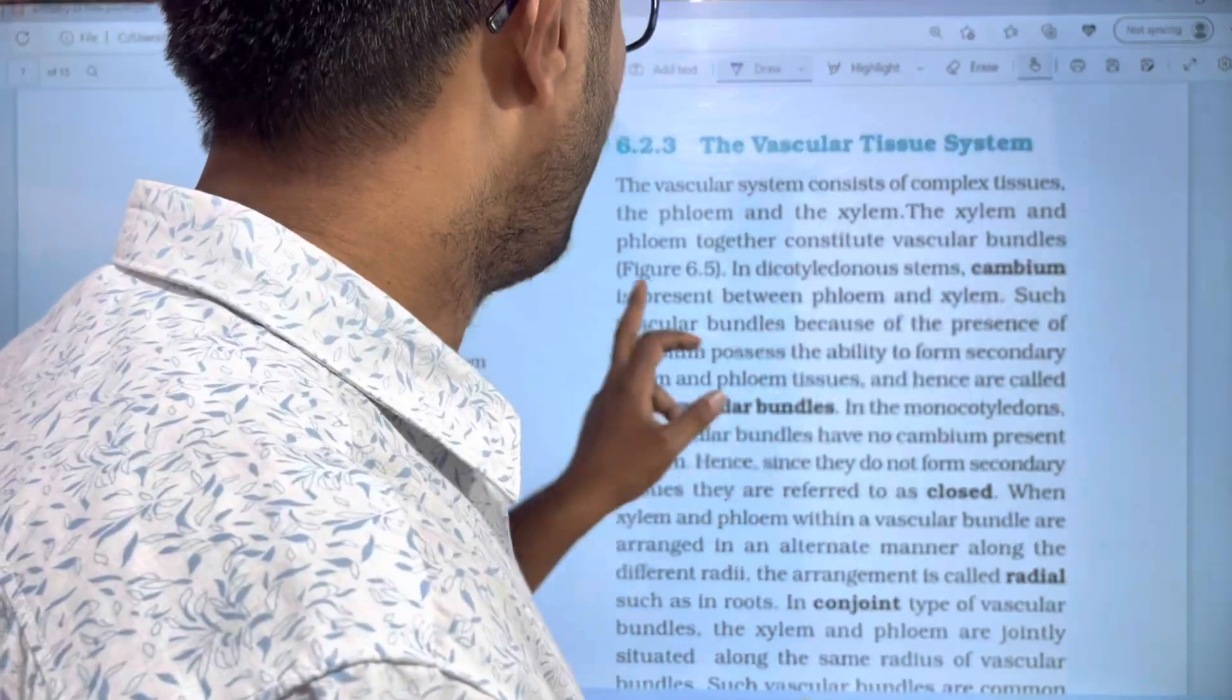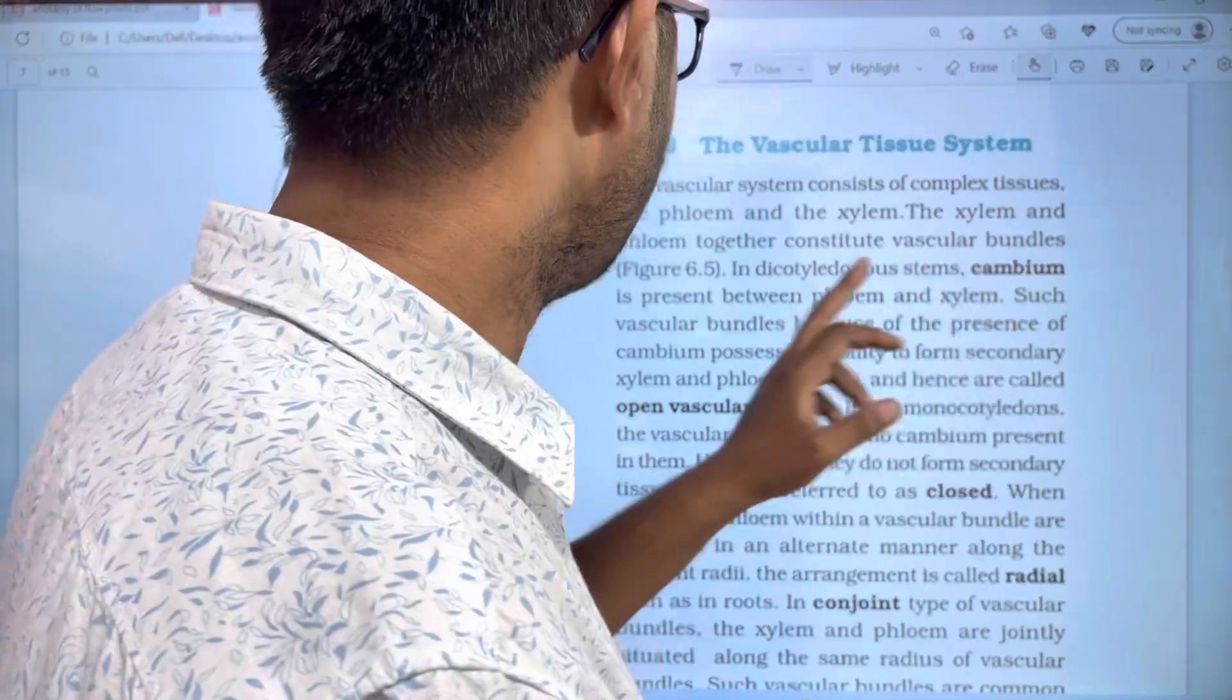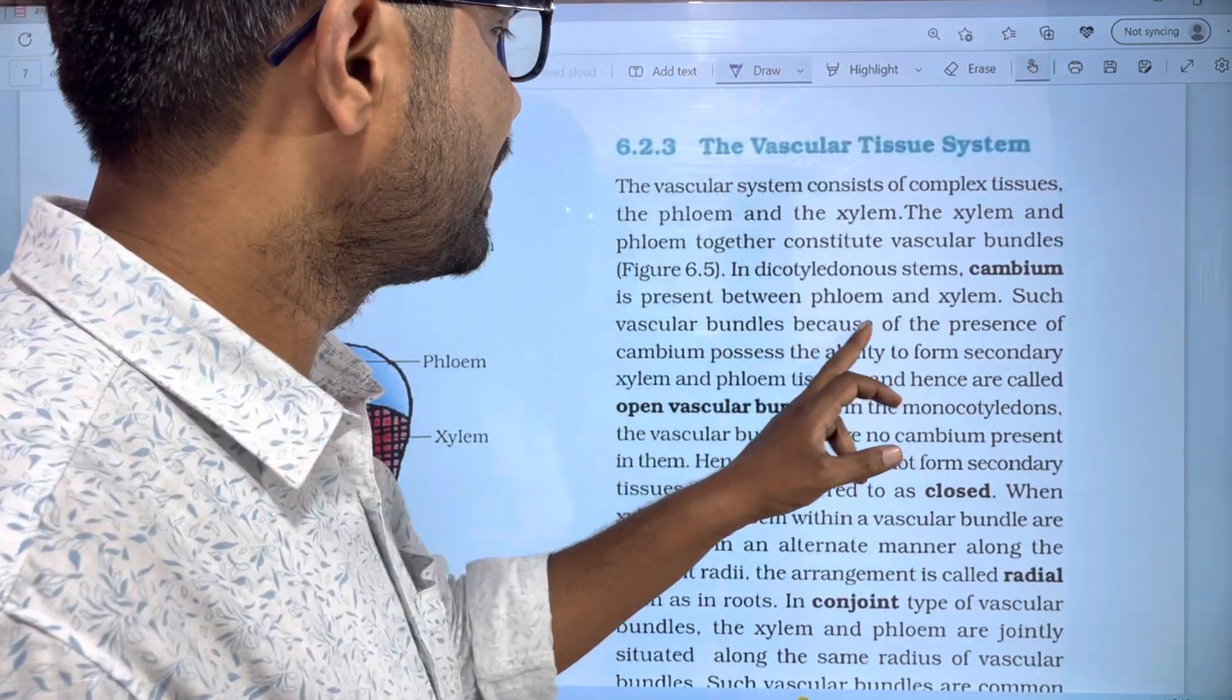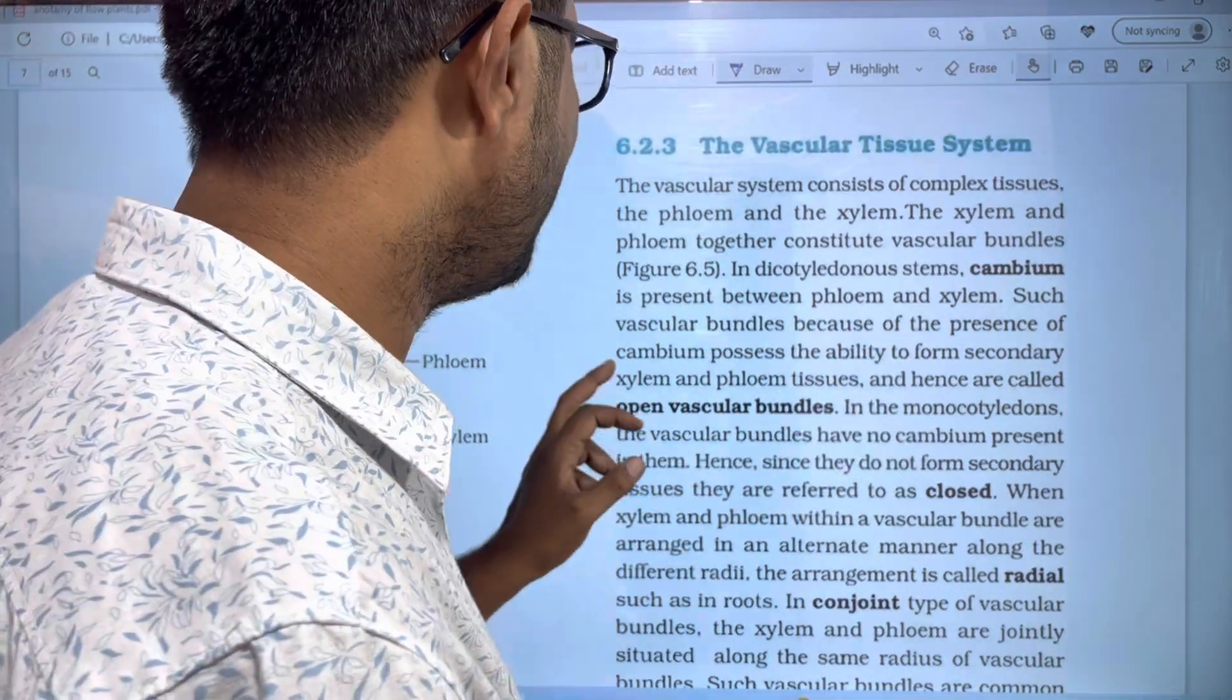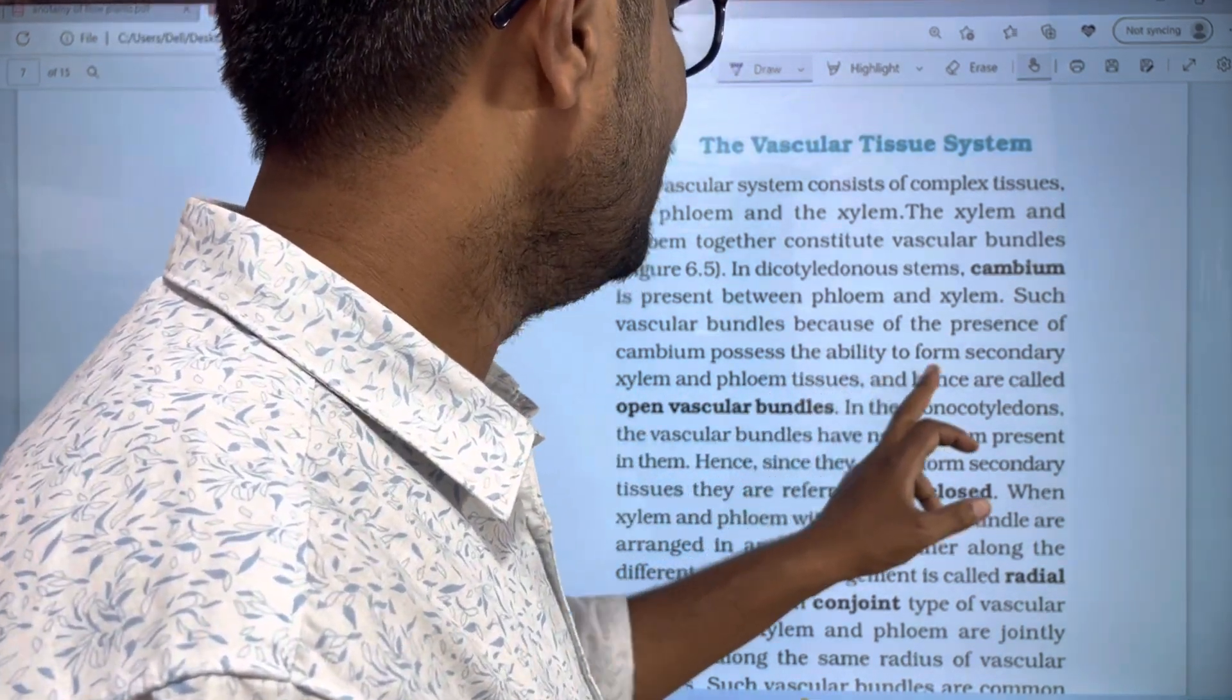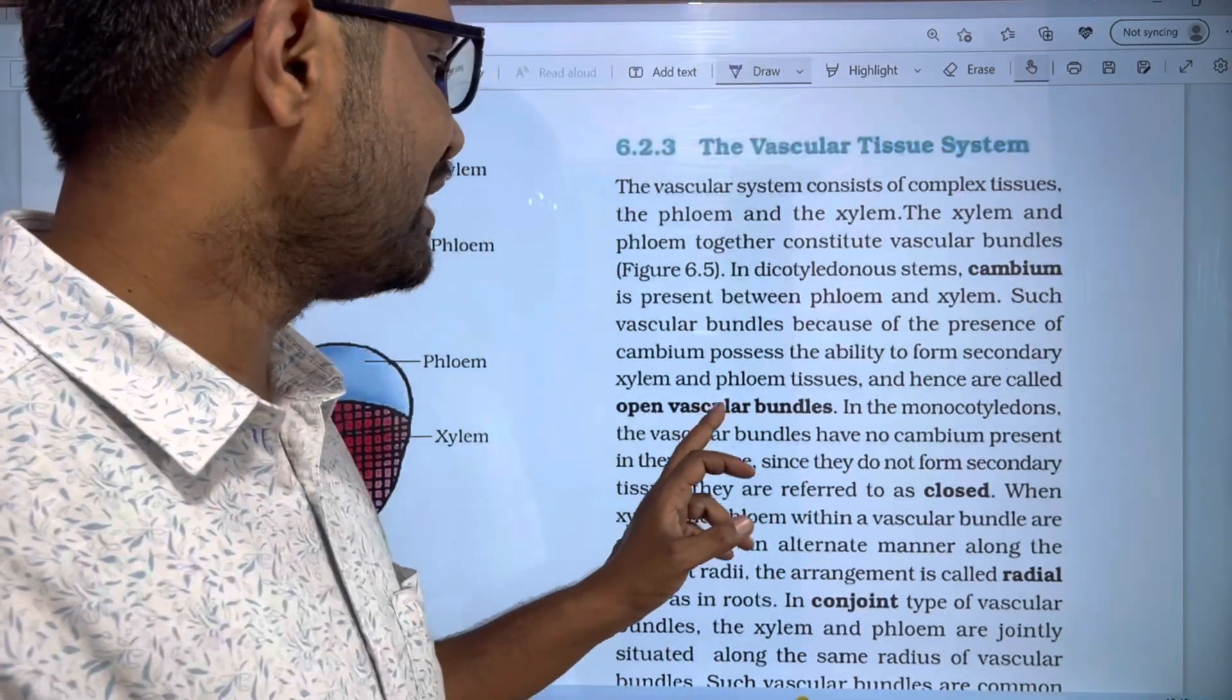In dicotyledonous plants, cambium is present between phloem and xylem. Such vascular bundles, because of the presence of cambium, possess the ability to form secondary xylem and phloem tissues, and hence are called open vascular bundles.